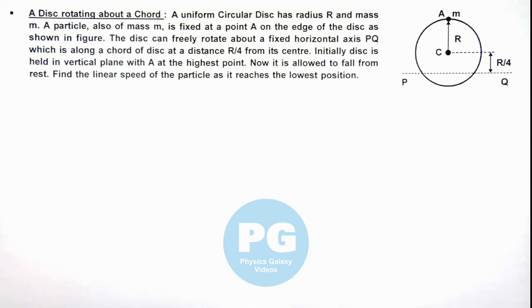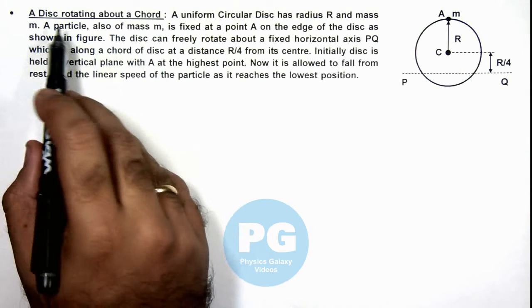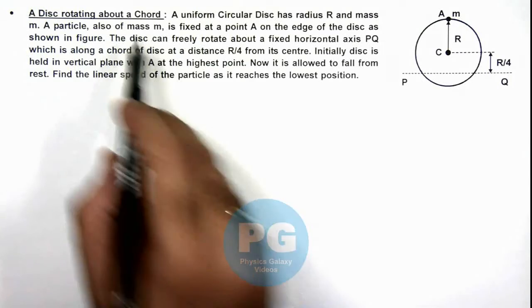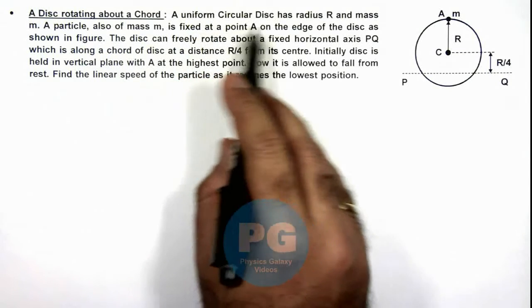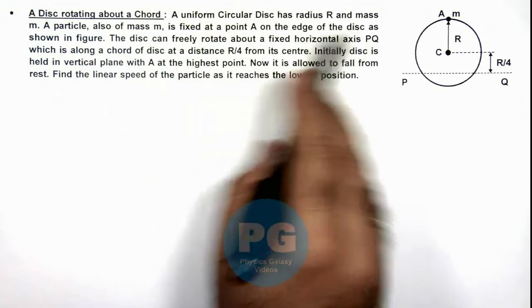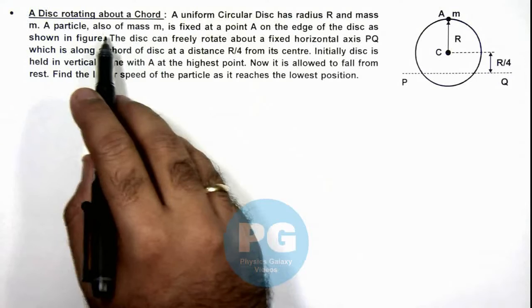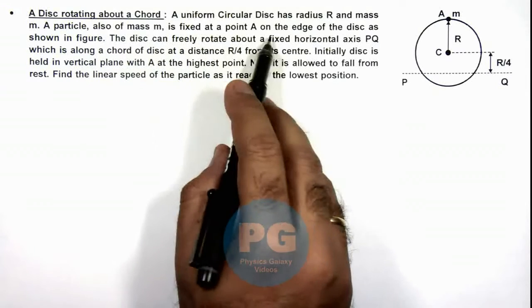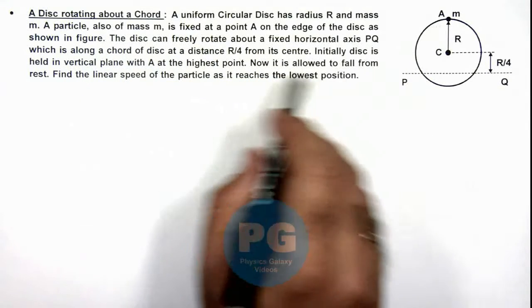In this illustration, we'll analyze a disc rotating about a chord. We are given that a uniform circular disc has radius R and mass m. A particle also of mass m is fixed at point A on the edge of the disc as shown in figure.